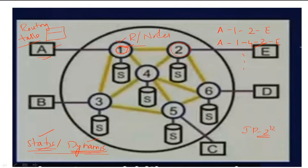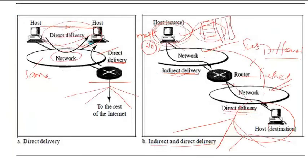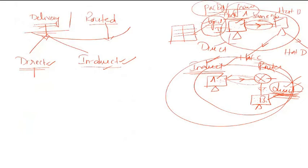Based on the network environment, the routing table changes determine whether the delivery is direct or indirect. If hosts are on the same network, delivery is direct; otherwise, it is indirect and a routing mechanism is needed. Here, from A to E there is no direct delivery — it is indirect through nodes 1, 2 — and each direct segment (A→1, 1→2, 2→E) is a direct delivery process.